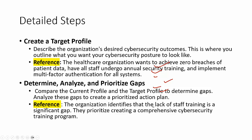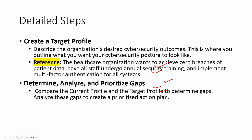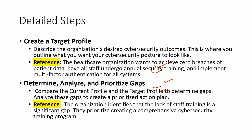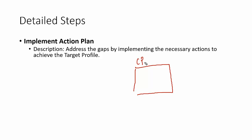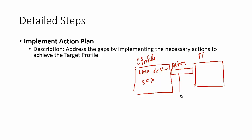We then implement an action plan. We identified that the organization lacks staff training and wants to implement multi-factor authentication. We compare the current profile and target profile to determine the gaps, then analyze those gaps to create a prioritized action plan. The lack of staff training was identified as a significant gap, so creating a comprehensive security training program became a priority. The current profile shows lack of security awareness training and a weak firewall configuration.